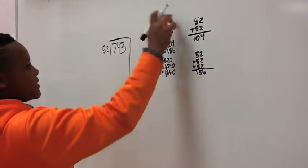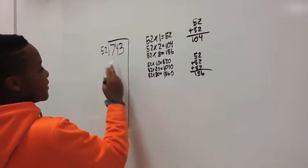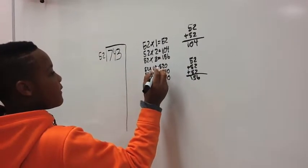Then after you make this, you pick whichever one is closest to this. So I would pick 520.